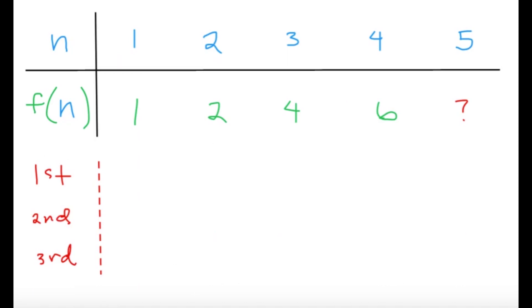So, let's try to take a look at the first, second, and the third difference, respectively, of the function. So, f of 1, 2, 3, 4 are given, and we're asked to get f of 5. So, you can use the method here to analyze the differences.